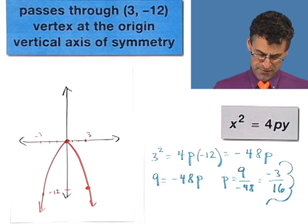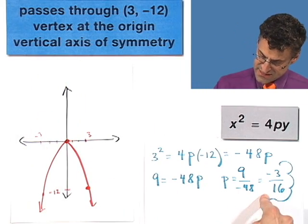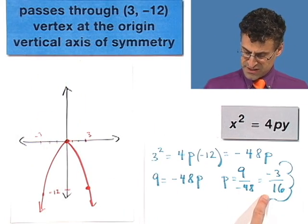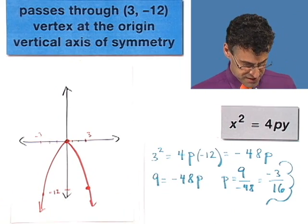So the p value is going to be on the y axis at a depth of negative 3 sixteenths, even in my lousy picture. Does that make sense? It kind of does.